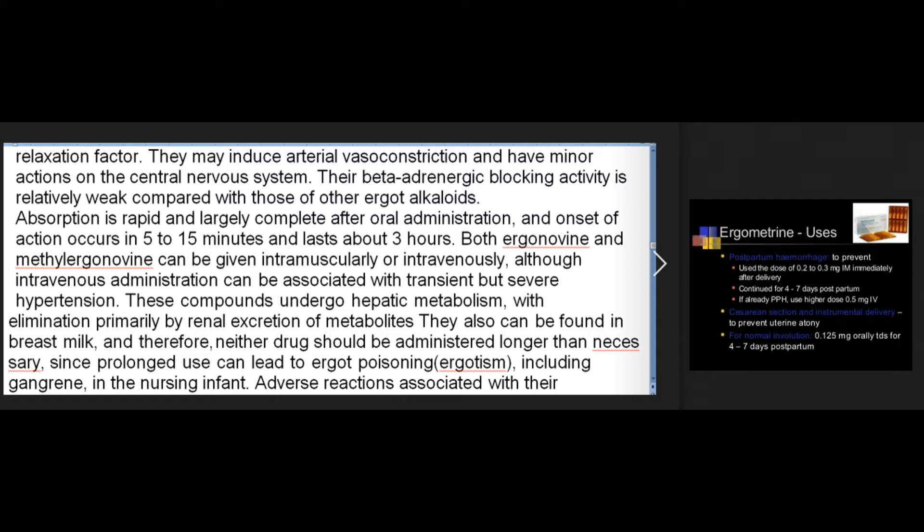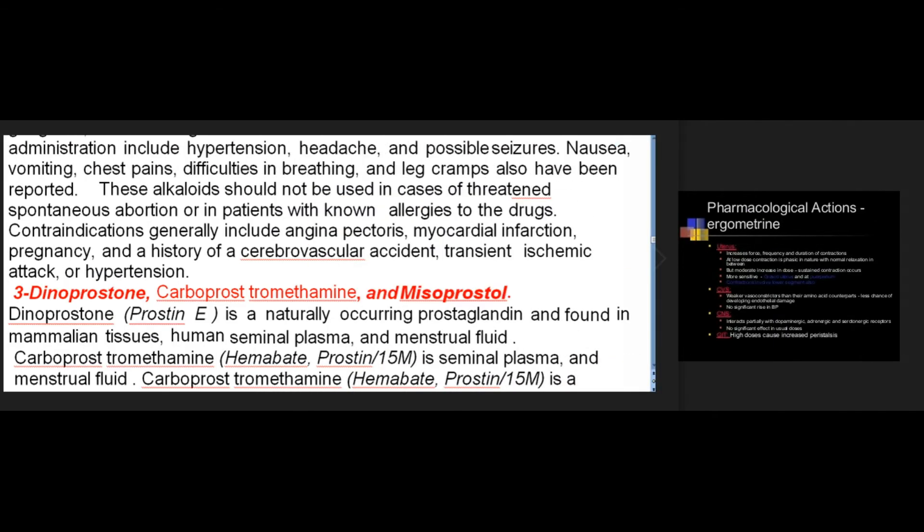Both drugs can be found in breast milk, and therefore neither should be administered longer than necessary, since prolonged use can lead to ergot poisoning (ergotism), including gangrene in the nursing infant. Adverse reactions include hypertension, headache, and possible seizures; nausea, vomiting, chest pains, difficulties in breathing, and leg cramps have also been reported. These alkaloids should not be used in cases of threatened spontaneous abortion or in patients with known allergies. Contraindications generally include angina pectoris, myocardial infarction, pregnancy, and a history of cerebrovascular accident, transient ischemic attack, or hypertension.